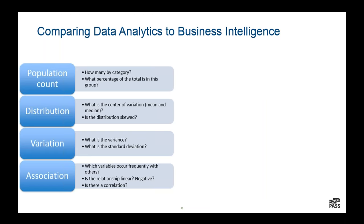Distribution and variation are really key things to understand about our data when working on analytics or data science projects. The center of variation — mean and median. Mean is our average: we take the total of some number divided by the count of objects. The problem with means is they can get distorted by outliers. A median figures out where the line is where half our values are above and half are below.